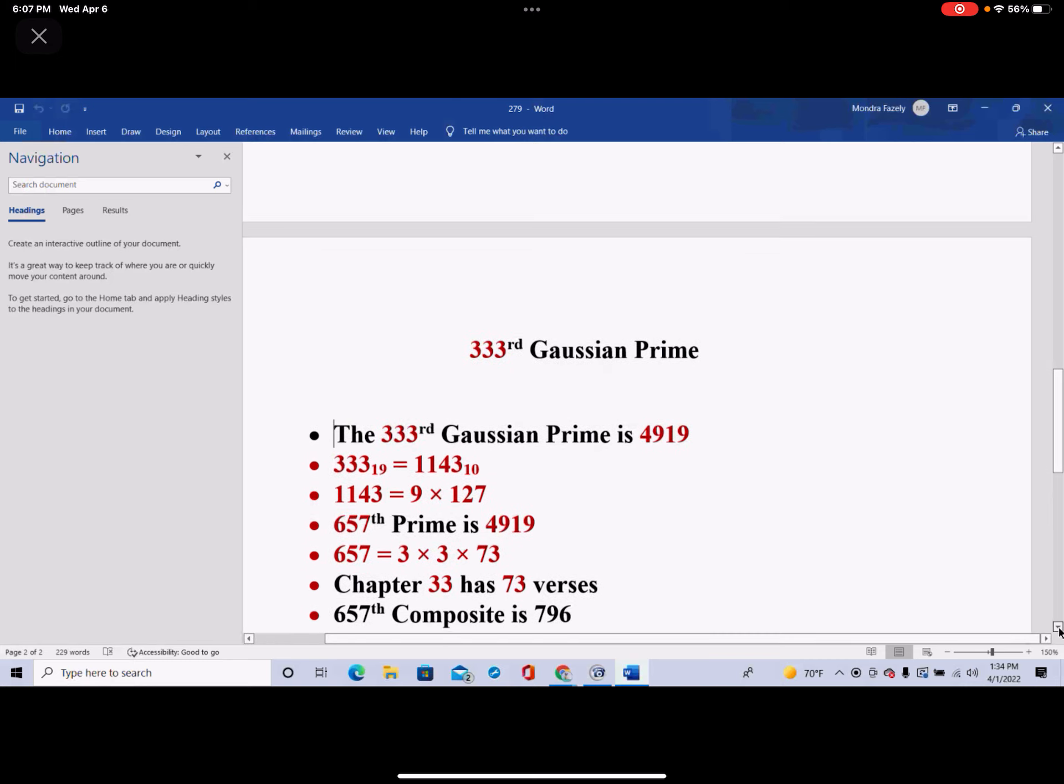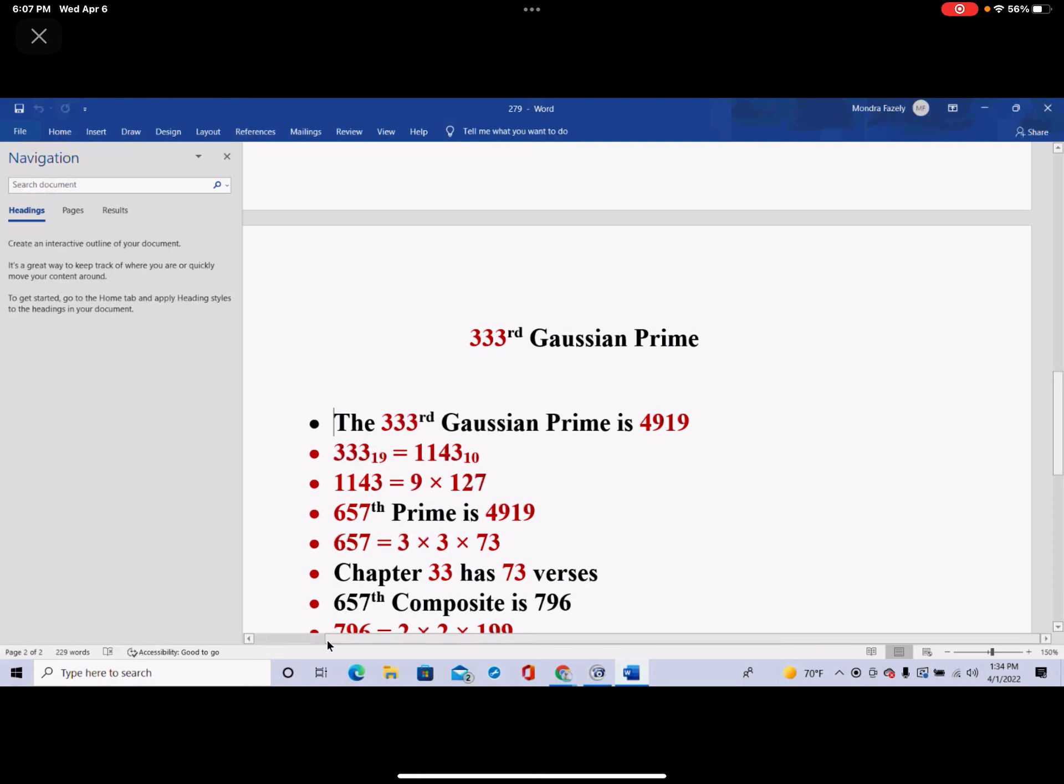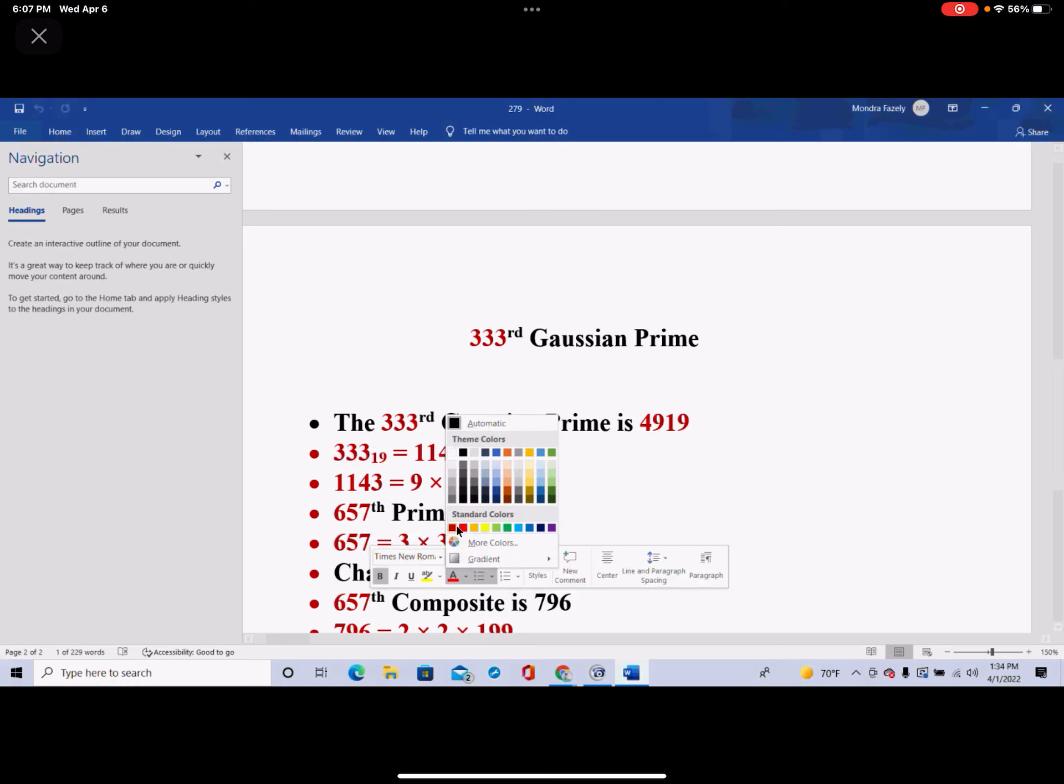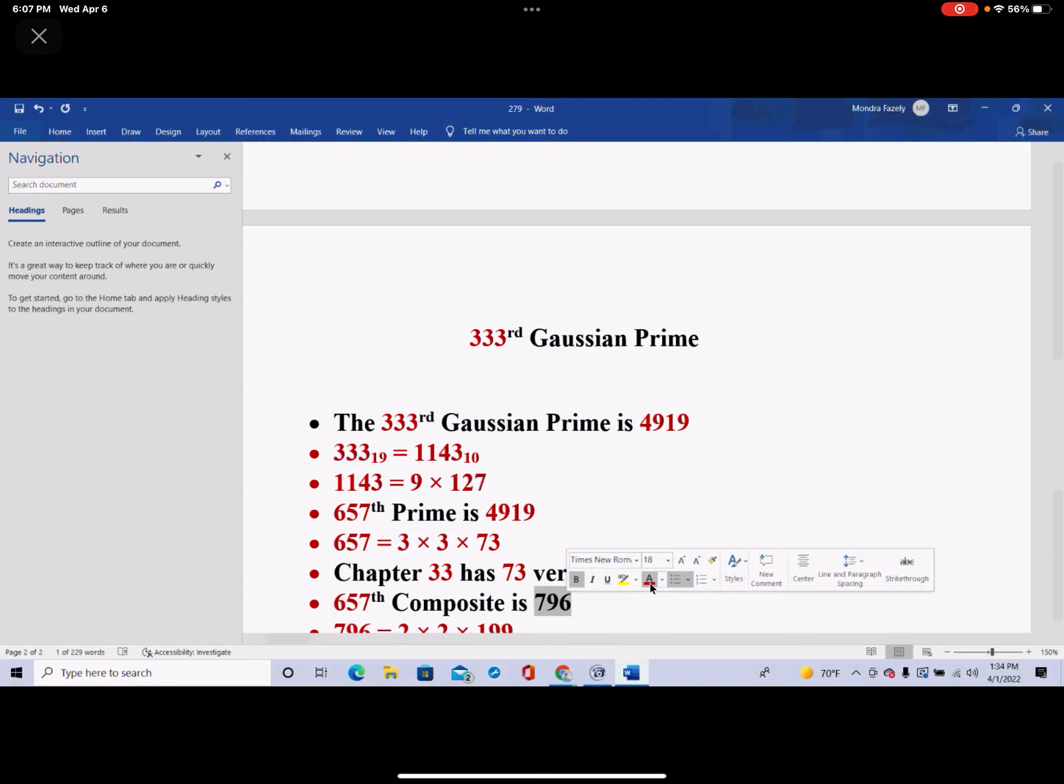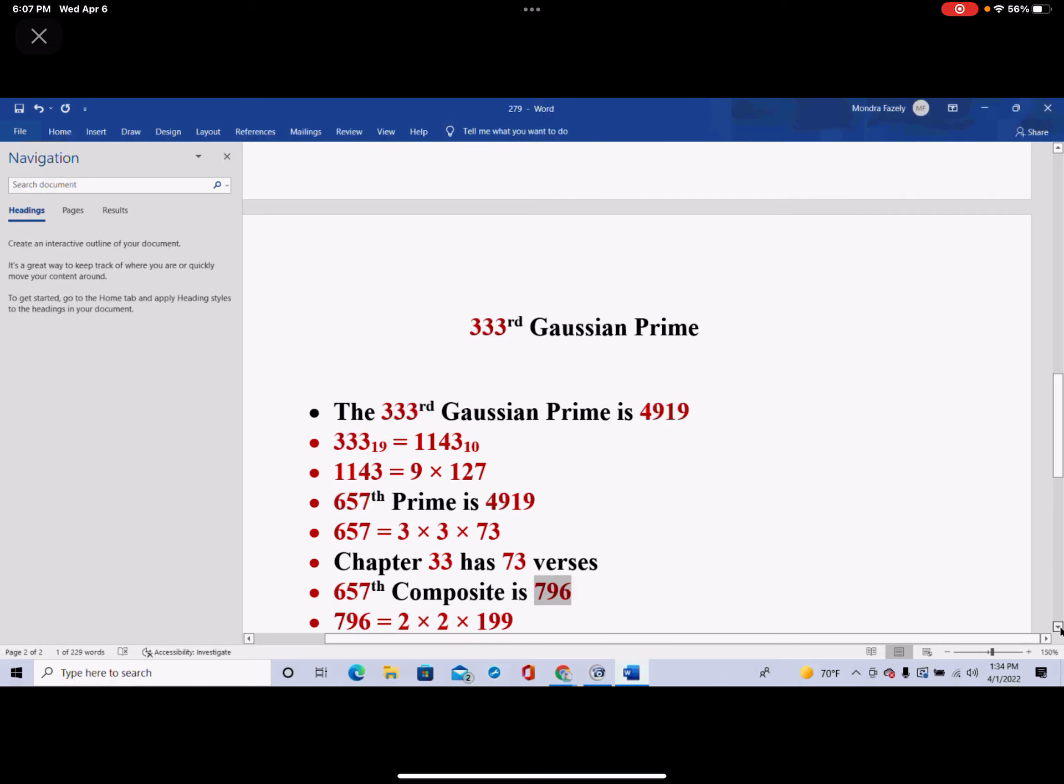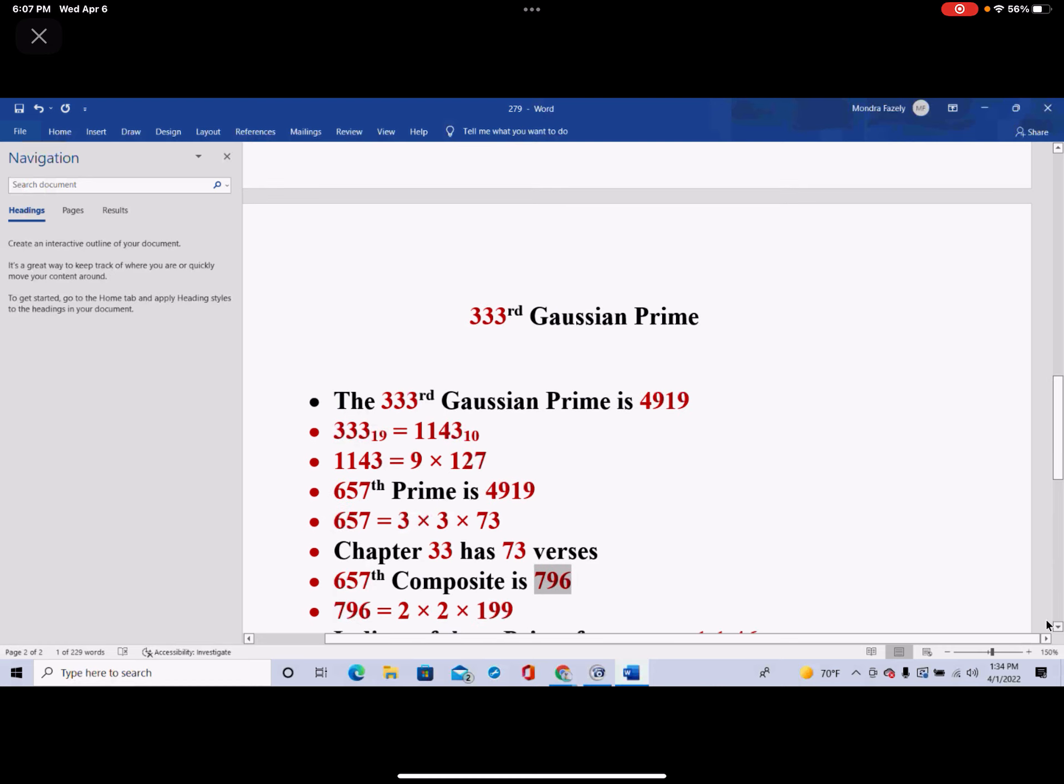And so now we come down a little bit, and we find out that 657th composite happens to be 796. The same index of 4919 happens to be the index of this, and 796 actually is 2 times 2 times 199.